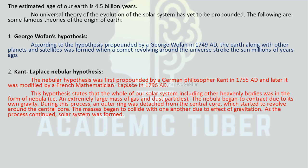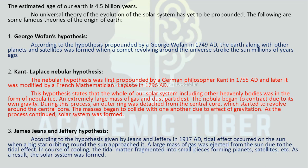The next one is the James Jeans and Harold Jeffreys hypothesis, also known as the Tidal Hypothesis. English astronomers James Jeans and Harold Jeffreys proposed the Tidal Hypothesis in 1917 AD. According to this hypothesis, a big star passed nearby the Sun. A long filament of gases was drawn from the Sun by the huge gravity of the big star. The outer part of the filament escaped into space and the inner part came back to the Sun, but the middle part of the filament condensed into a series of rounded structures of different sizes — these were the planets. In this way, Earth along with other planets was originated.